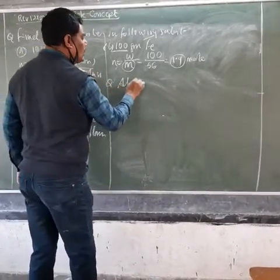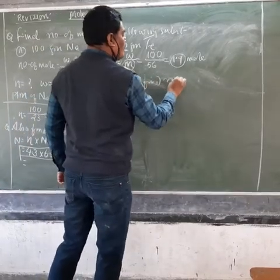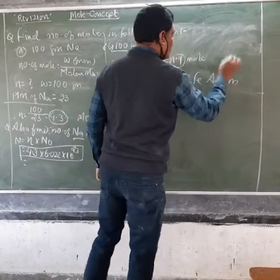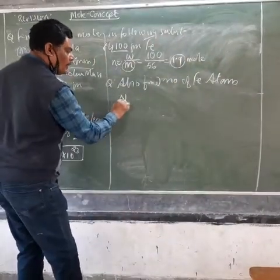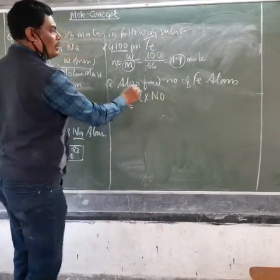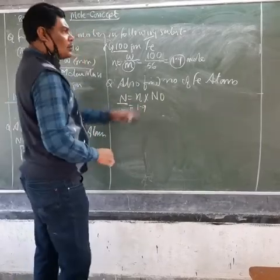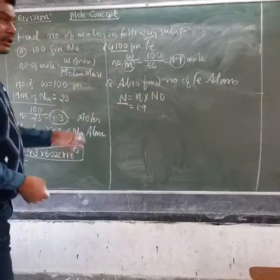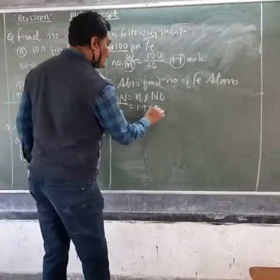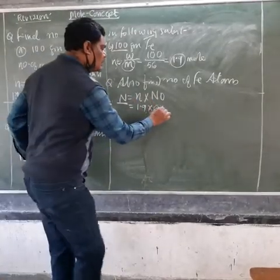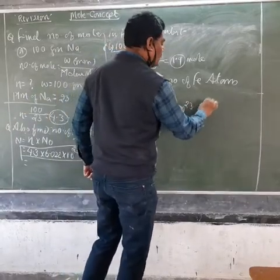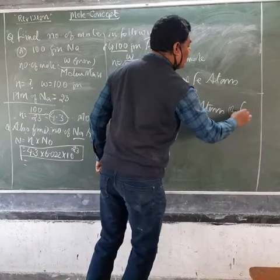Now also find the number of iron atoms. Number of atoms = number of moles multiplied by Avogadro's number. The number of moles is approximately 1.9 — you have to solve it precisely in your notebook. So it is 1.9 multiplied by 6.022 × 10²³. This gives you the number of atoms of iron.